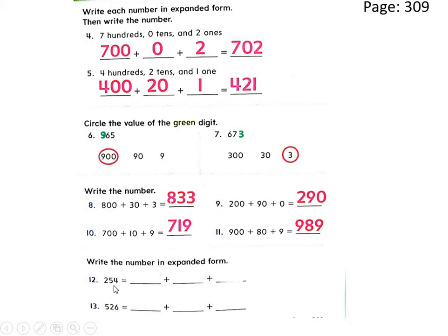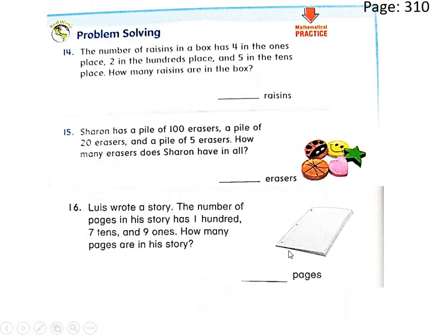Write the number two hundred fifty-four in expanded form. Two hundred plus fifty plus four — that is the expanded form of two hundred fifty-four. Try to solve question number thirteen by yourself and then check your answers.